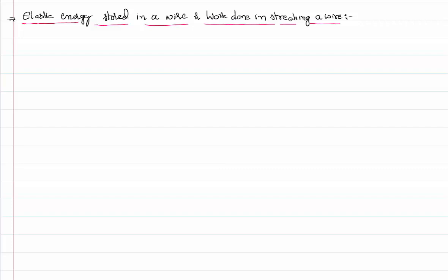Let us try understanding what this means. In Young's modulus, or in elasticity, we have a term called modulus of elasticity, which is a measure of the elastic nature of the material. If you have a higher modulus of elasticity, the body is better at protecting its shape. Young's modulus is defined as the ratio of longitudinal stress — force acting per unit area — to longitudinal strain, which is the ratio of change in length to original length.